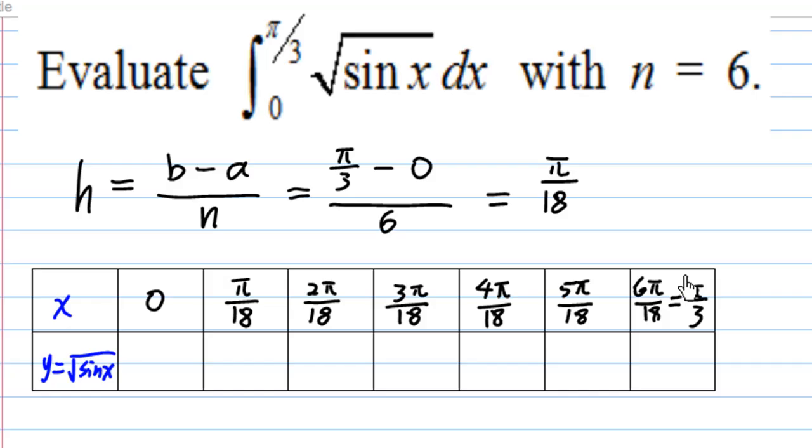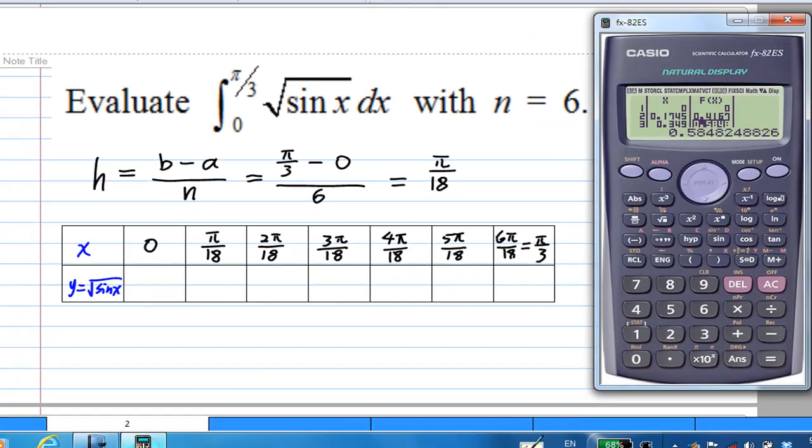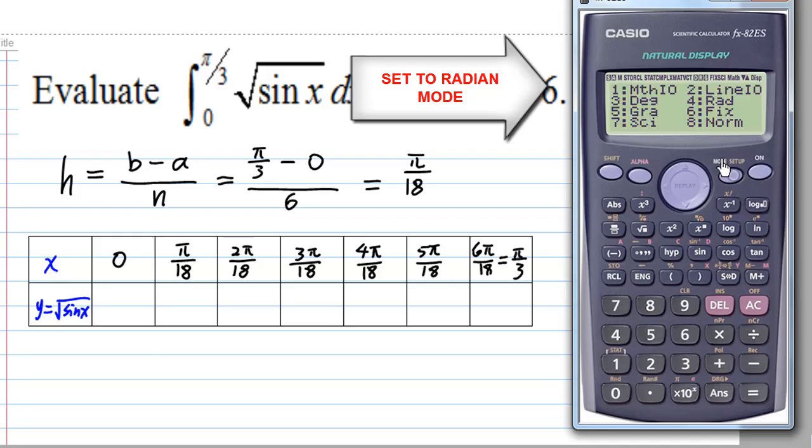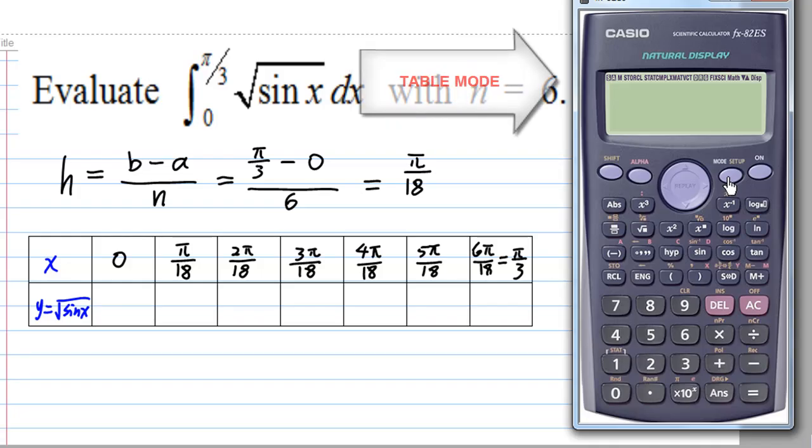To evaluate the y, I can use a calculator to help me. Let me call out my calculator. I'm going to set the calculator to radian mode first, since any trigonometric function will require radian mode for computation. Shift, mode to set up, and select 4 for radian mode. Then I'm going to set up table, mode, 3 for table, and I enter the function, which is square root of sine x, and press equal.